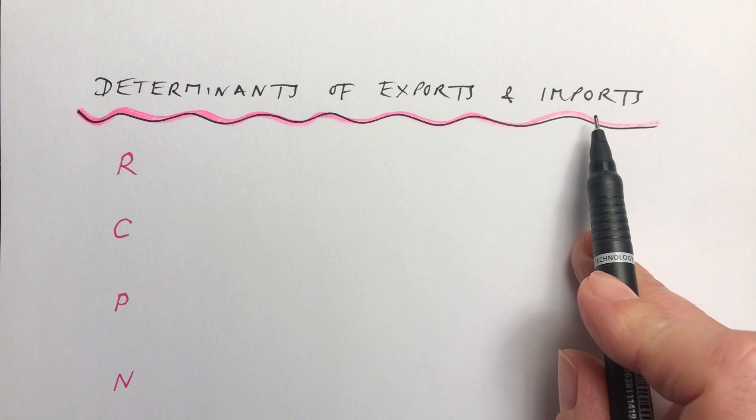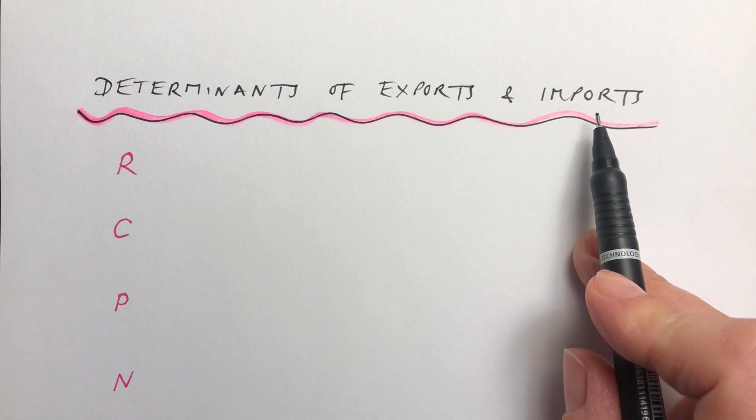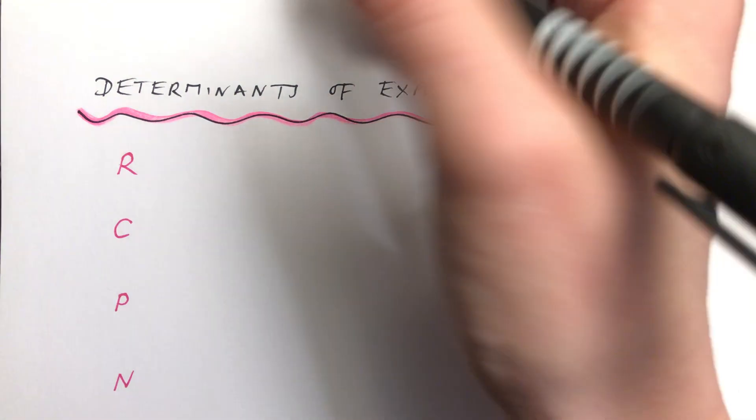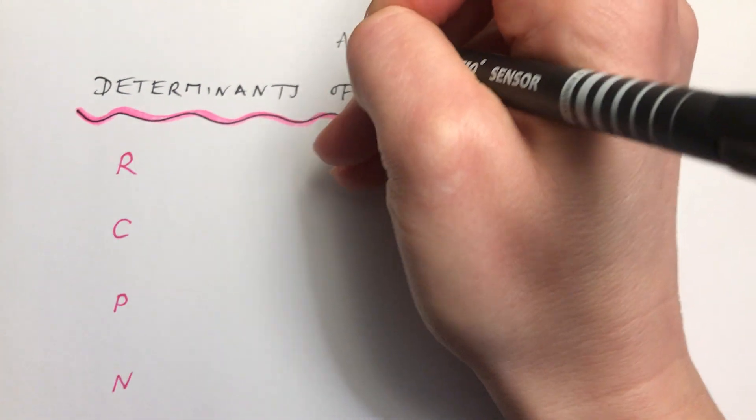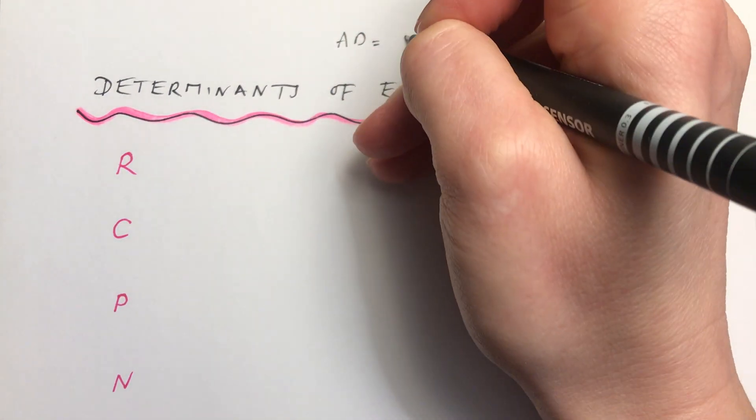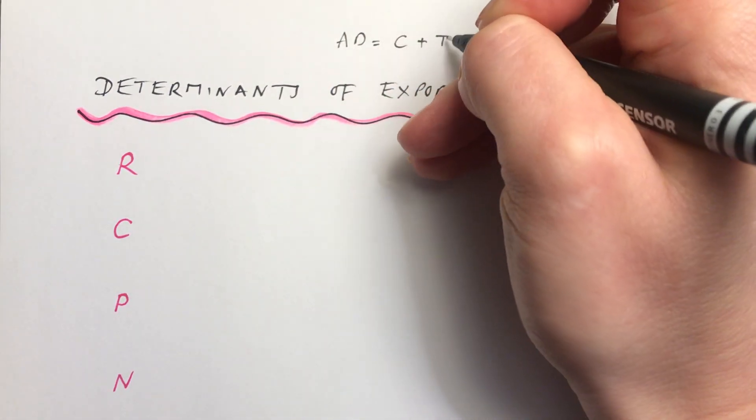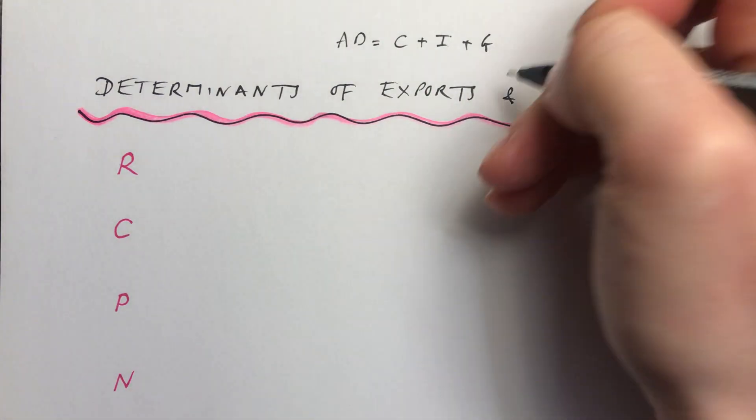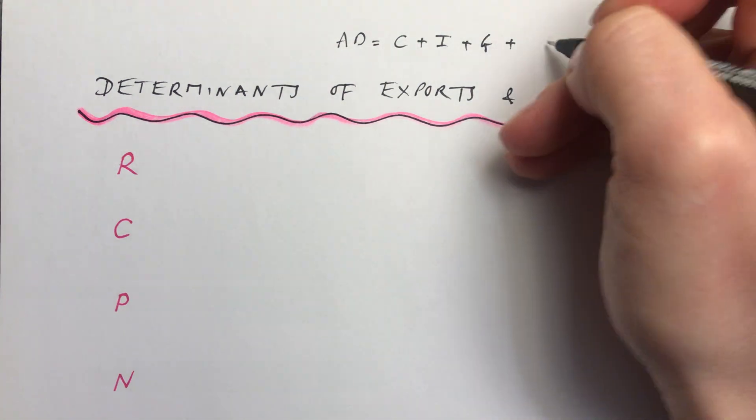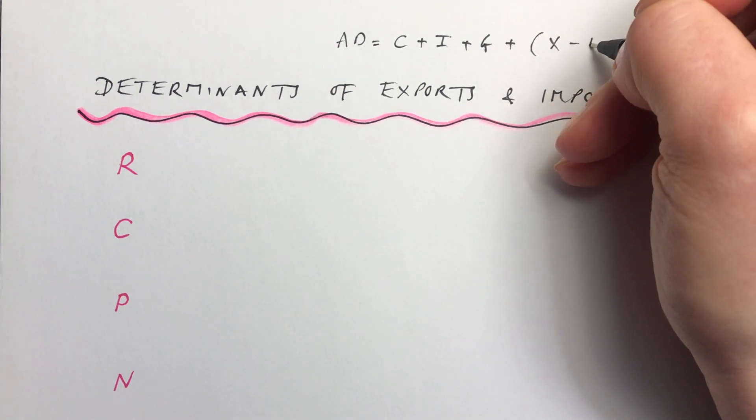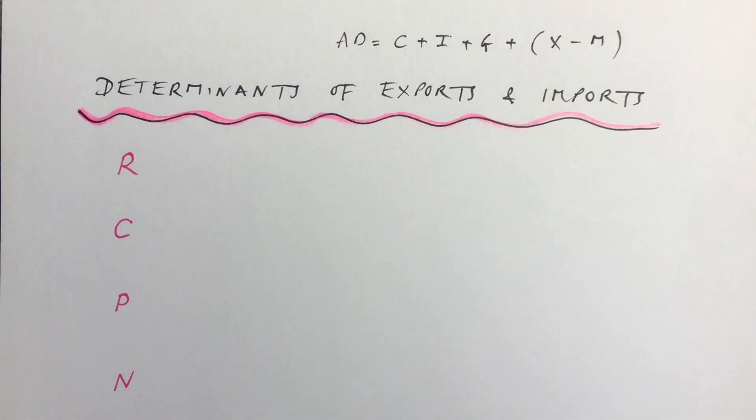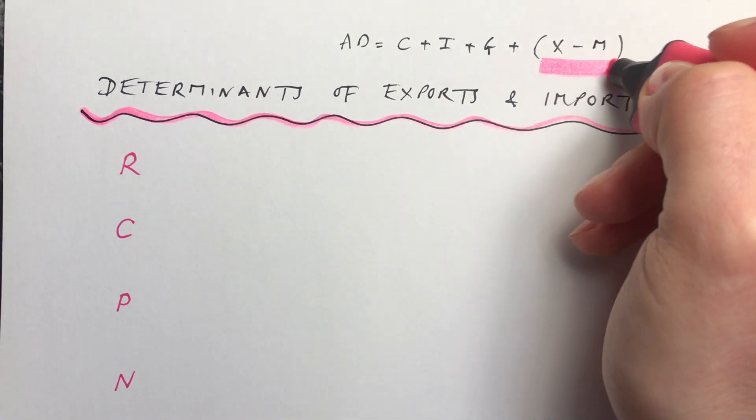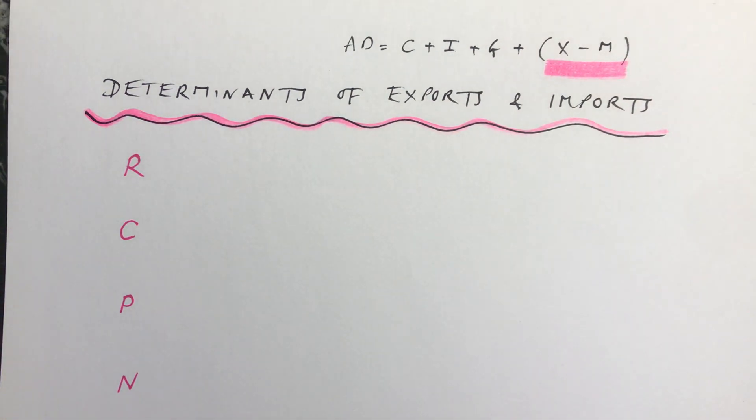This is looking at the final component of aggregate demand because you'll remember that aggregate demand is equal to consumption plus investment plus government spending plus, and this is what we're really looking at now, exports minus imports.